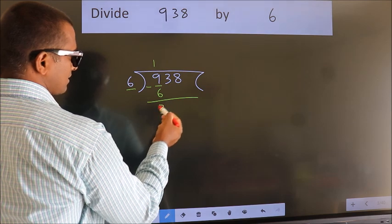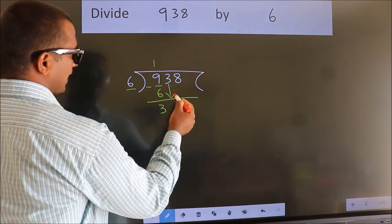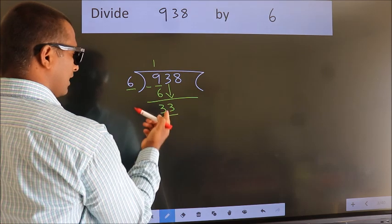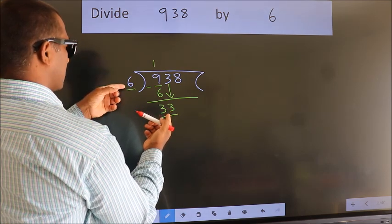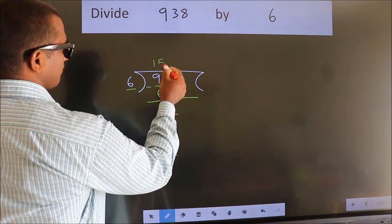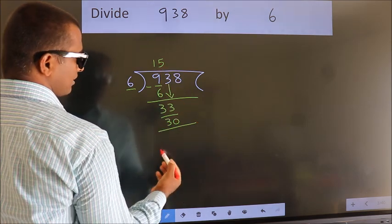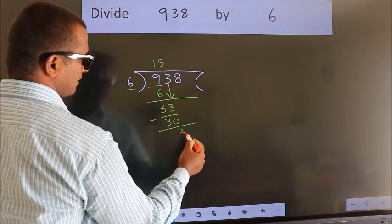After this, bring down the beside number. 3 down, so 33. A number close to 33 in the 6 table is 6×5=30. We subtract. We get 3.